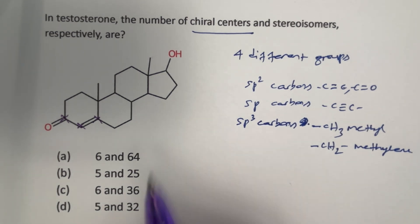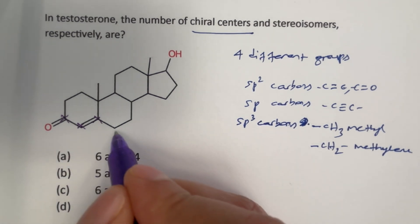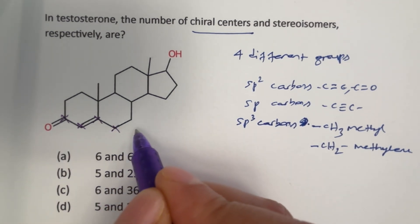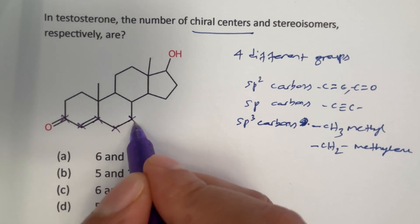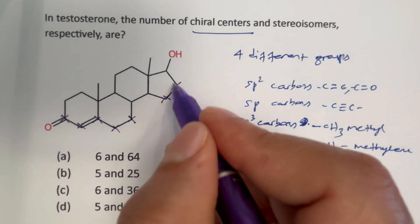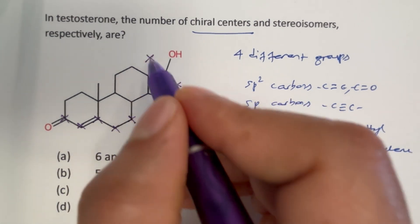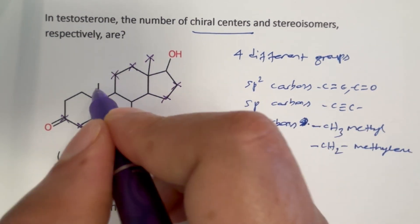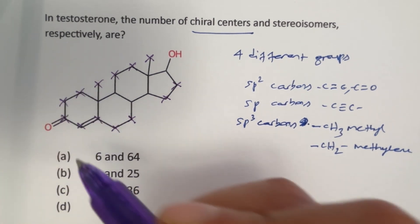Therefore, let us eliminate all the methyl groups and methylene groups. So CH2 here, we can eliminate. This is also CH2, we can eliminate. CH2, let us eliminate those CH2 and then CH3 here, CH2, CH2, CH3, CH2, CH2.